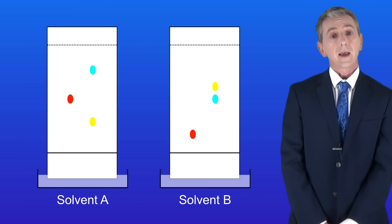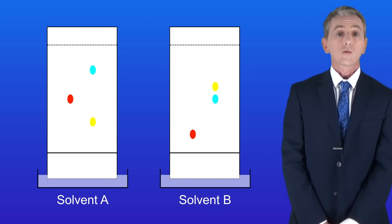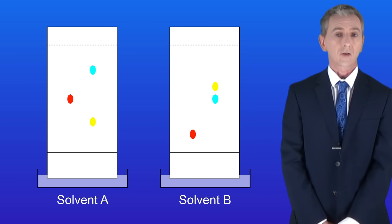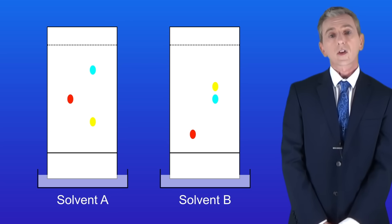These show the experiment again but this time repeated with a different solvent. You can see that the red color still produces a single spot even if we change the solvent. The position of the spot may change but it's still a single spot.